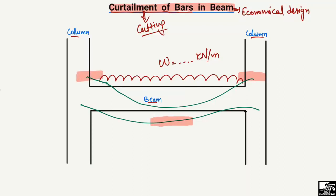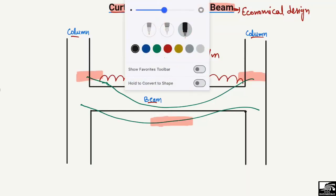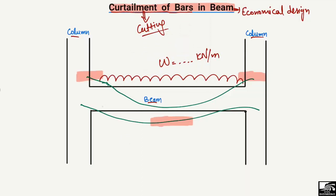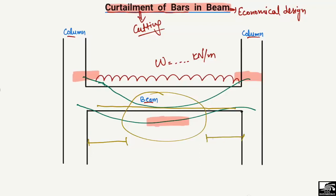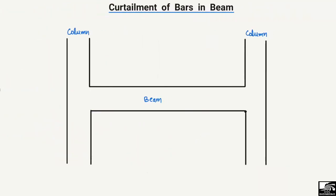We always provide reinforcement in the beam in the region where we have bending moment, because reinforcement is used to take the bending stresses. We provide reinforcement at the bottom of the beam, but we want to cut the bars where the bending moment is very small or zero. The bending moment is extreme only at certain positions, so that's why we cut the bars in the regions where it is not needed.